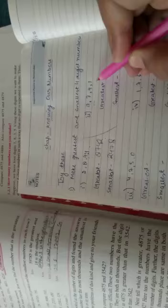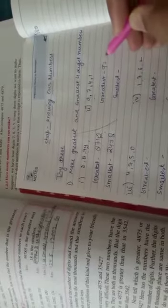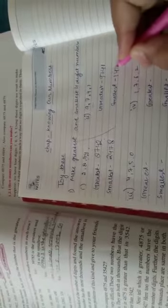Similarly in this case the greatest number is 9, 9 se chota 7, 7 se chota 4 and 4 se chota 1. The smallest number is 1, 4 se bada 7, 7 se bada 9.